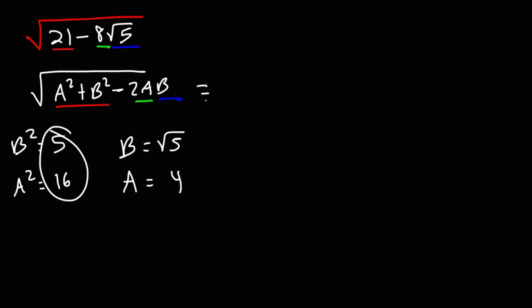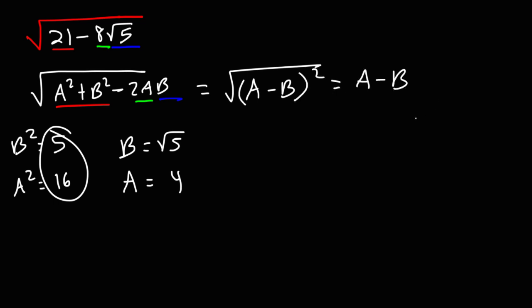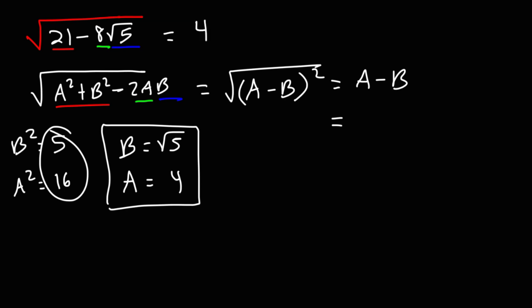Now we know that a squared plus b squared minus 2ab is going to be (a - b) squared, which simplifies to a minus b. So we know that a is 4 and b is the square root of 5. So it's going to be 4 minus the square root of 5. This right here is the answer.